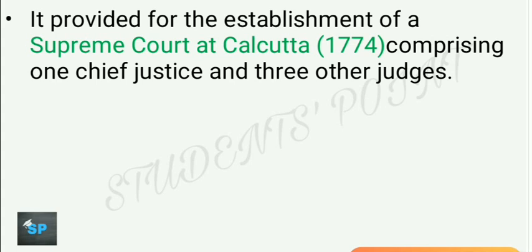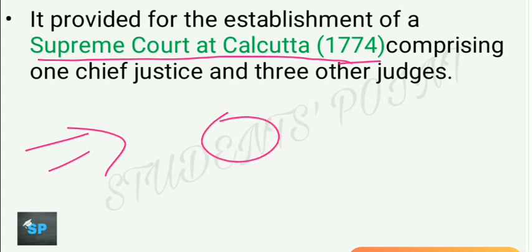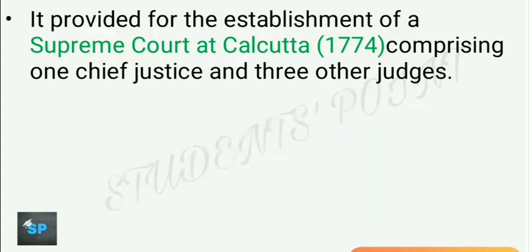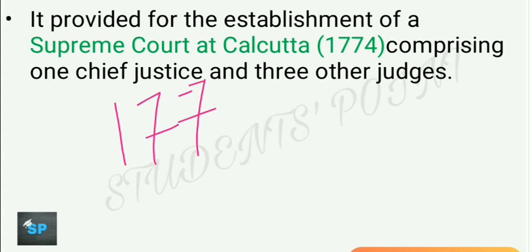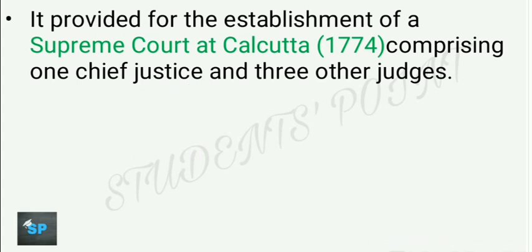This act prohibited servants of the company from engaging in any private trade or accepting presents or bribes from the natives. It required the Court of Directors — the governing body of the company — to report on its revenue, civil, and military affairs in India. This act also provided for the establishment of the Supreme Court at Calcutta in 1774. In examinations, they ask which act established the Supreme Court at Calcutta — it was the Regulating Act of 1773.